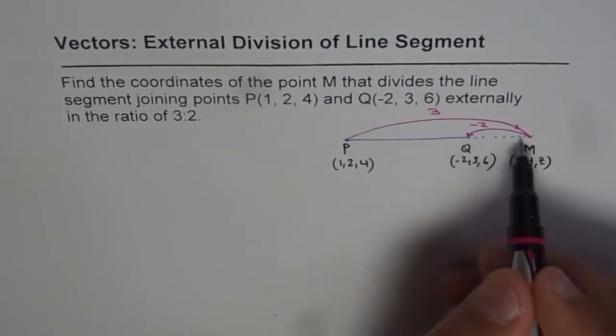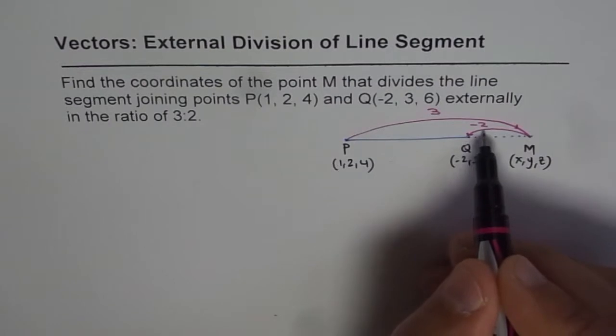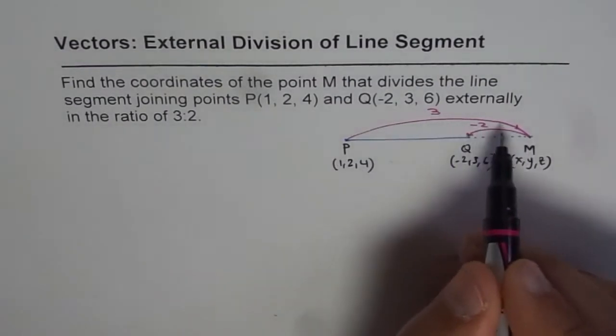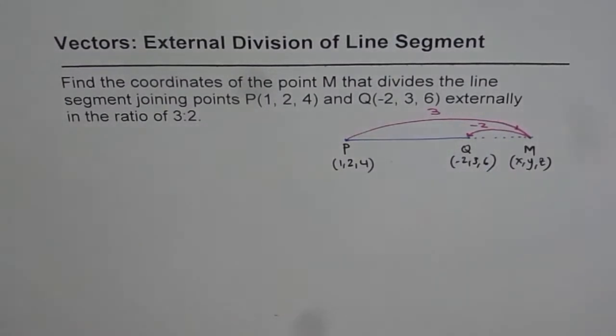Then QM or MQ will be minus 2, since M is dividing in the ratio of 3 to 2 externally.